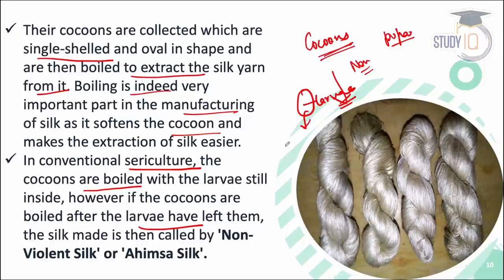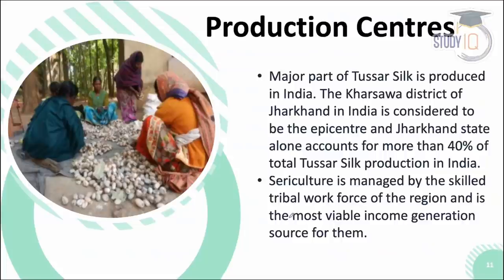This is why it is known as Ahimsa silk — because the larva is allowed to come out of the cocoon before silk is extracted. Unlike normal sericulture where the pupa is killed by boiling, in Ahimsa silk production the live larva exits the cocoon first. That is the key reason it is called non-violent or Ahimsa silk.